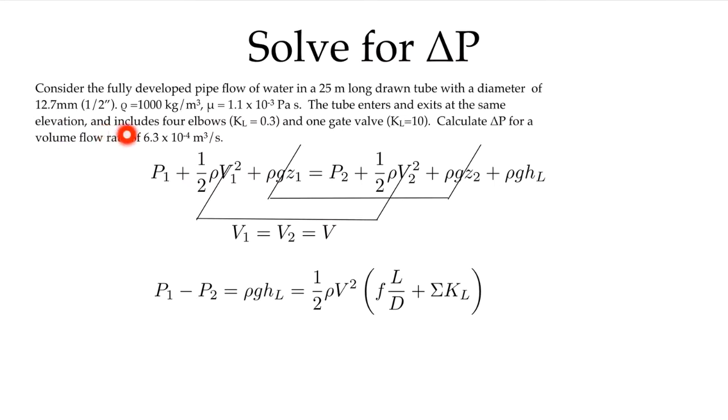The tube enters and exits at the same elevation and includes four elbows. I'm giving the loss factor for each elbow as 0.3, and it has one gate valve with a loss factor of 10. The question is to calculate ΔP for a volume flow rate of 6.3×10⁻⁴ m³/s.